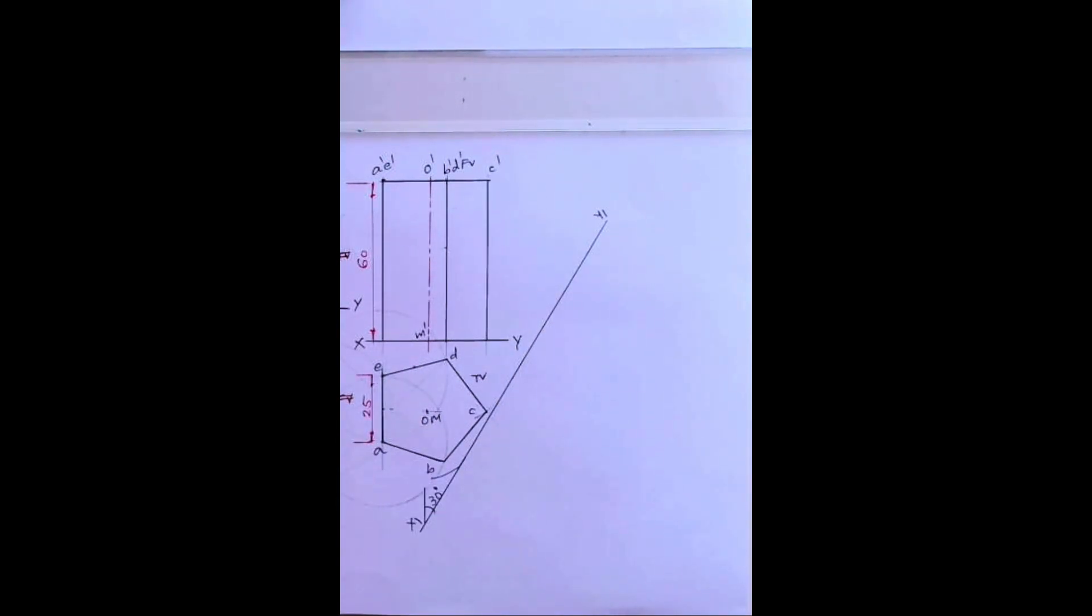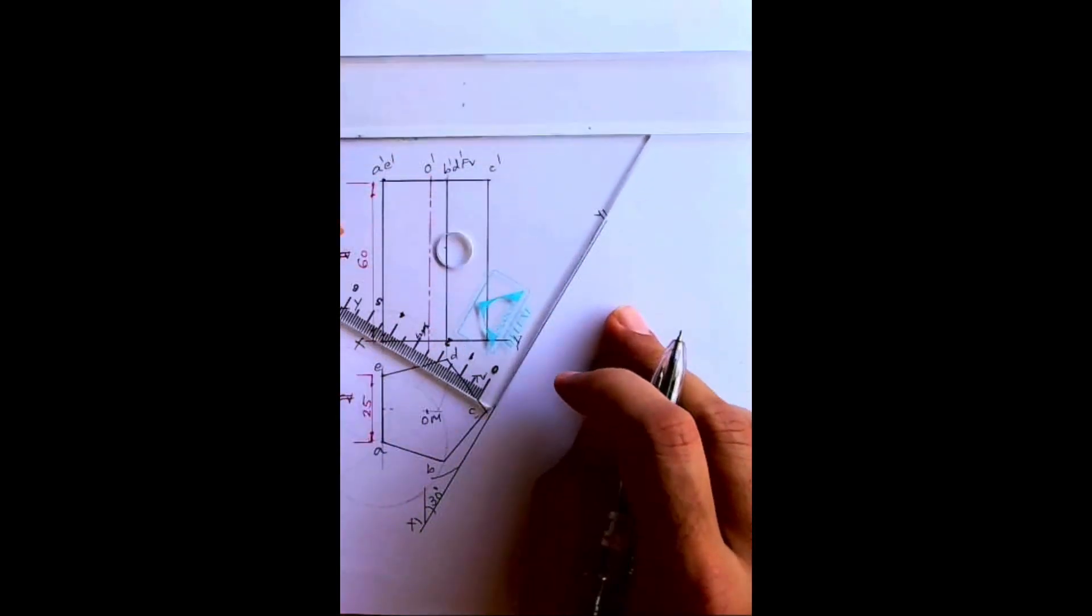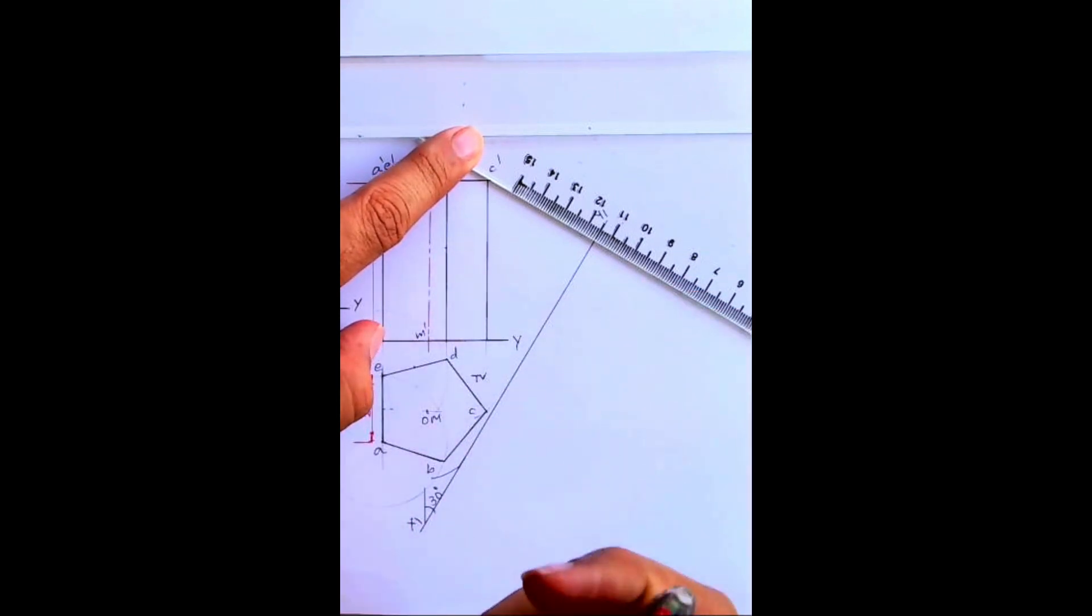Now we have to draw auxiliary top view which will come next to top view. So see, there is already a plane so we take perpendicular to this, see, like this.